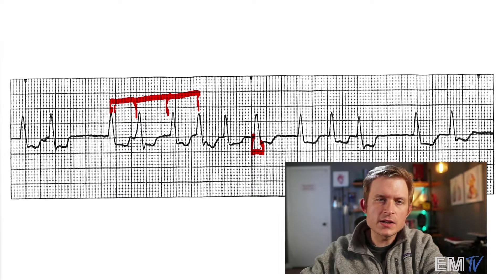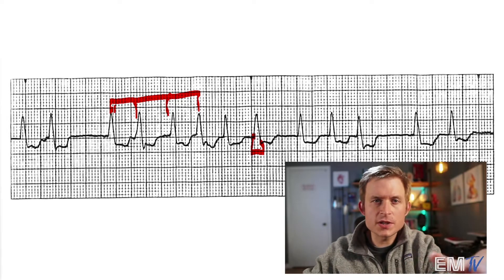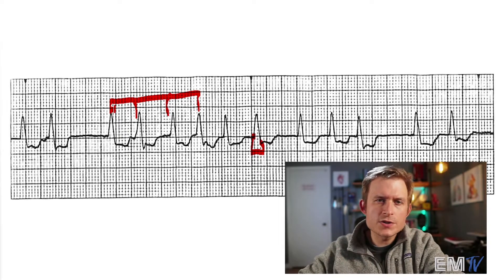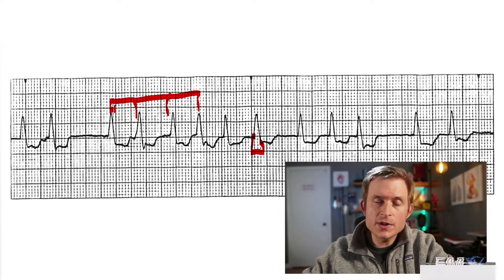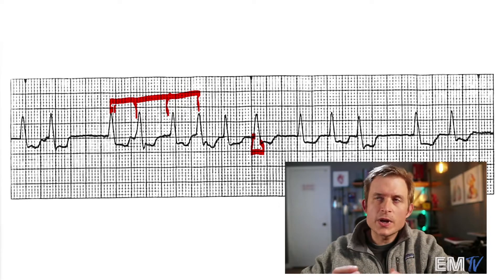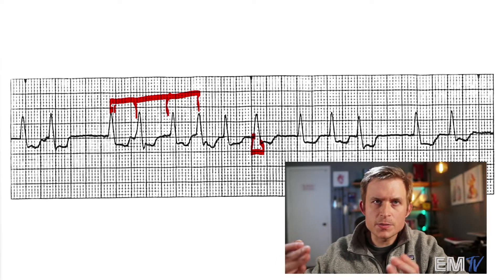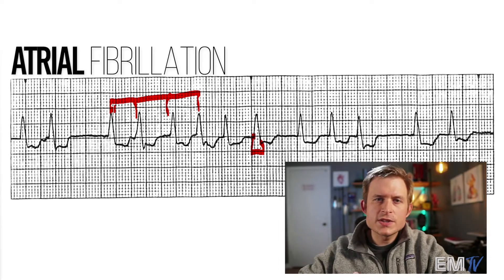Now fibrillation can exist in either the atria or the ventricle. The difference between the two is the ability to conduct further down in the electrical system. The ventricle is pretty much the end of the line, so fibrillation there is chaotic and unorganized. Fibrillation that occurs in the atria, however, still has the ability to use the electrical conduction system in the heart and send impulses through the AV node and into the ventricle every once in a while. So atrial fibrillation is irregularly irregular, but unlike ventricular fibrillation, it can conduct beats. So that's why I'm diagnosing this rhythm as a-fib.